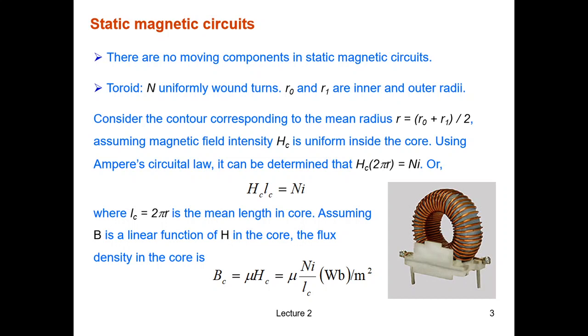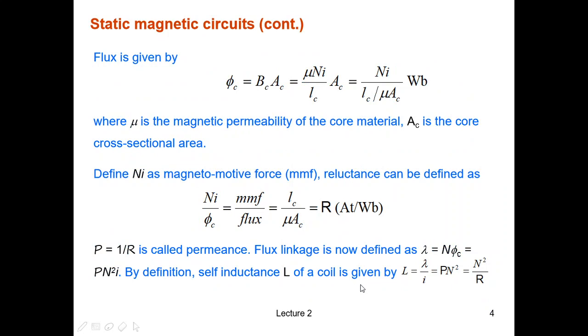We assume the flux density B is a linear function of H field intensity in the core. Therefore, the flux density in the core Bc is calculated like this. We can calculate the flux by multiplying the flux density with the cross-sectional area through which the flux is going through. And therefore we have this as the final expression.